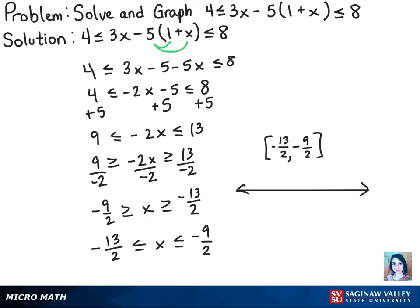And now graphing this we want to plot negative 13 halves and negative 9 halves. And we want them to have a closed circle since x includes those numbers themselves. So we'll fill those in.